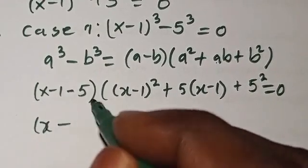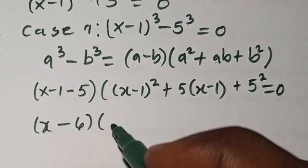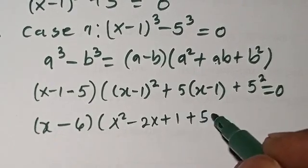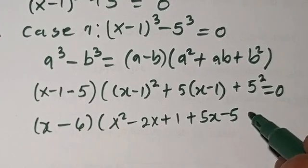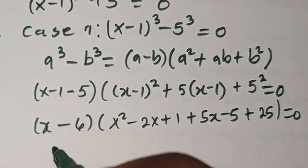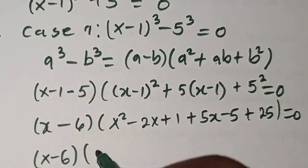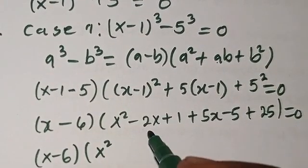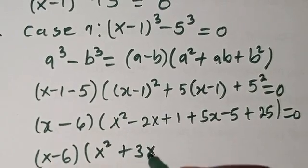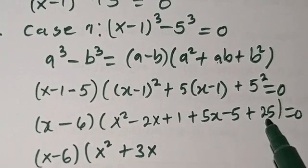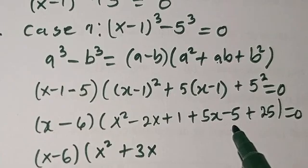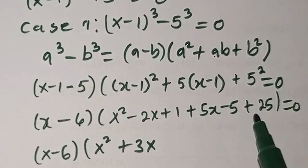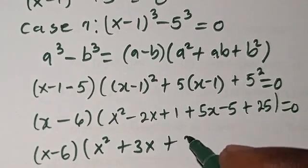This is going to be x minus 6. Then if you try to square x minus 1, this is going to be x squared minus 2x plus 1. Opening the bracket we have 5x minus 5, plus 25 equals 0. So we're going to have x minus 6 times x squared. Minus 2x plus 5x gives us plus 3x. Then 25 minus 5 plus 1 gives us plus 21, equals 0.